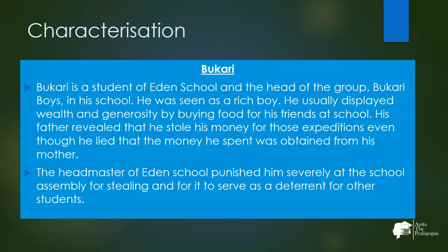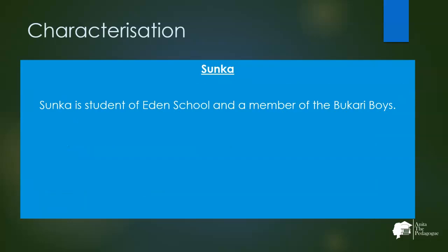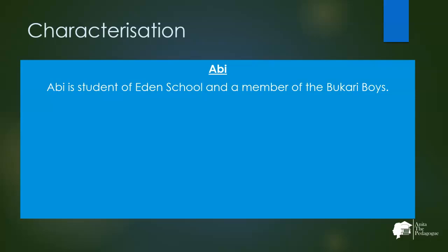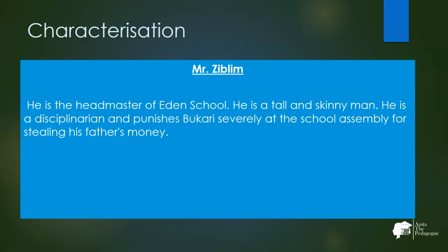Bukhari is a student of Eden School and the head of the Bukhari Boys. He was seen as a rich boy who displayed wealth and generosity by buying food for his friends. His father revealed he stole money for those expenditures, even though he lied that his mother gave it to him. The headmaster punished him severely at school assembly to serve as a deterrent. Sonka and Abhi are also students of Eden School and members of the Bukhari Boys. Mr. Ziblim is the headmaster — a tall, skinny man and a disciplinarian.